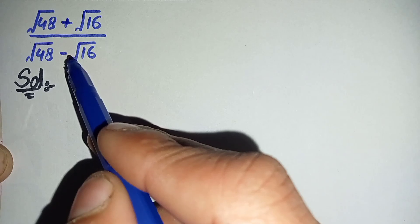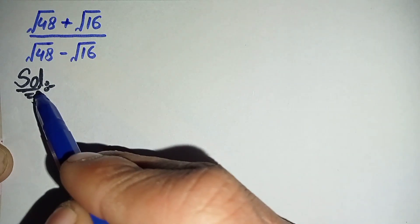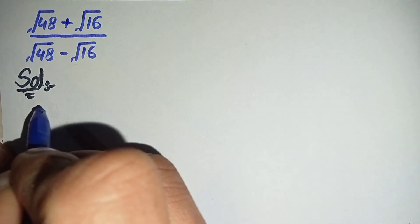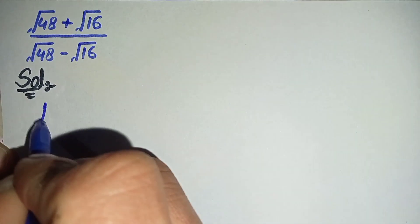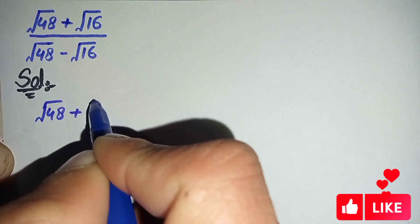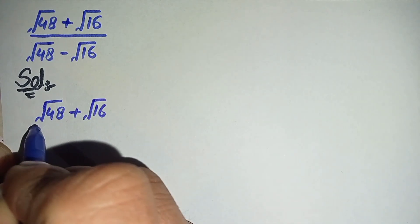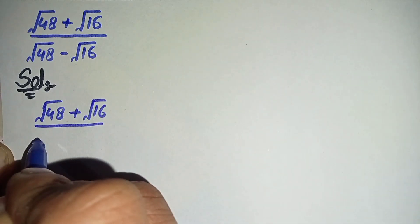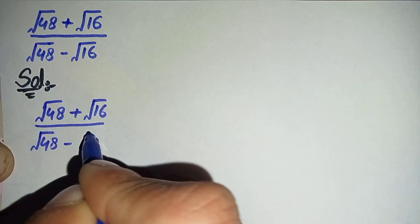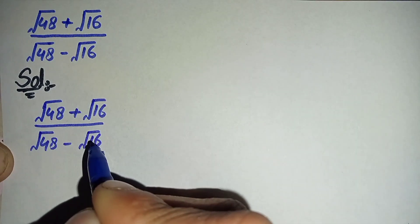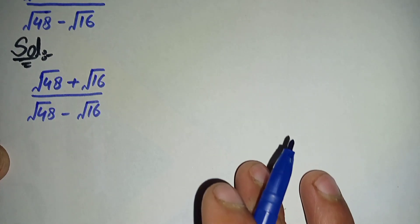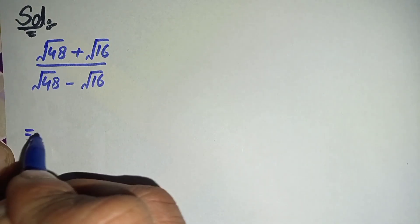To solve this math problem properly and step by step, first we will write the solution, and then we will write this question in the solution again. The question is: square root of 48 plus square root of 16, divided by square root of 48 minus square root of 16. In the next step, I will factorize 48 in the numerator and denominator.